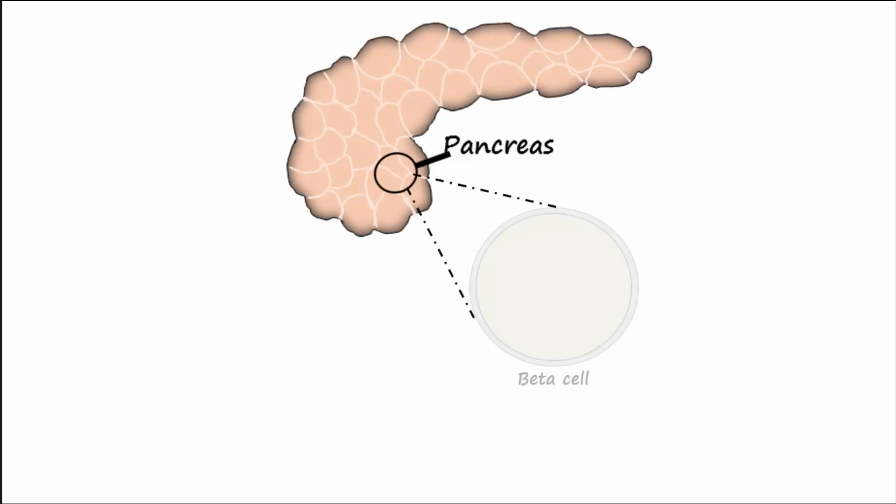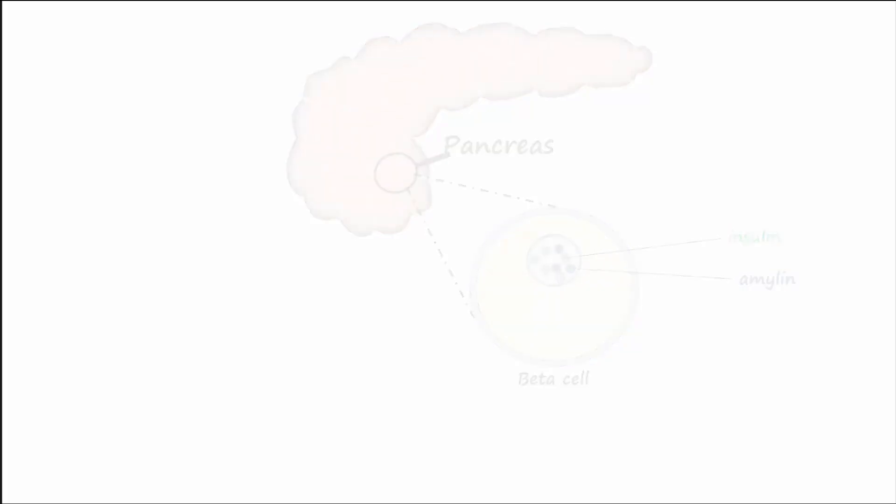The function of these beta cells is to produce insulin and amylin. Let's talk about how insulin is released from the beta cells of the pancreas. Glucose levels in the blood are monitored by the beta cells.